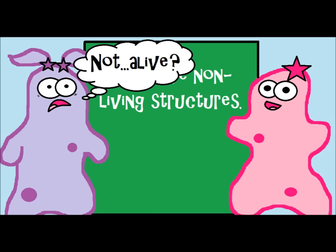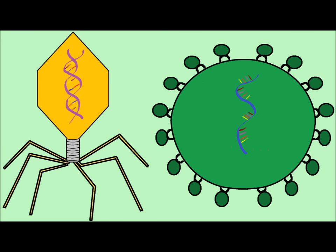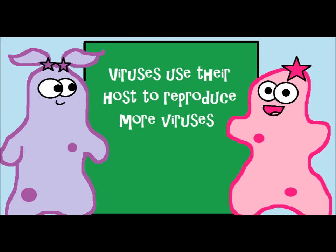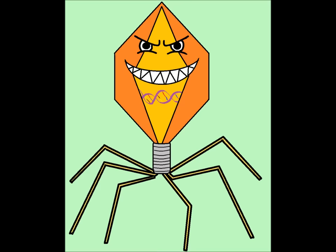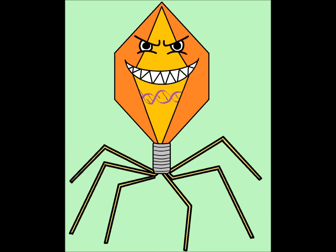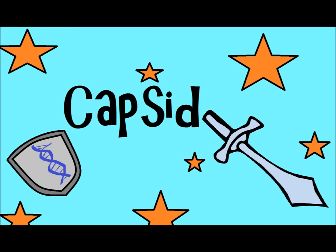But let's talk about what viruses actually have — their structure. One thing all viruses have in common is that they have some type of genetic material. This does not mean they can reproduce on their own, but they're going to use that genetic material and force their host to reproduce them. This genetic material is DNA in some viruses, and RNA in others. They also have some kind of protein coat, also known as a capsid. The capsid protects that DNA or RNA genetic material.